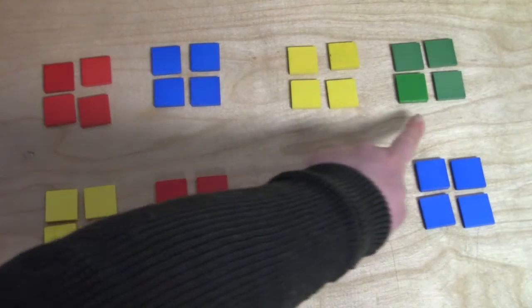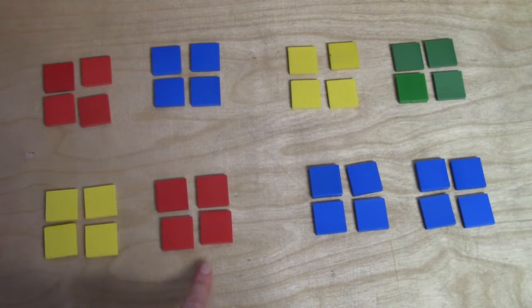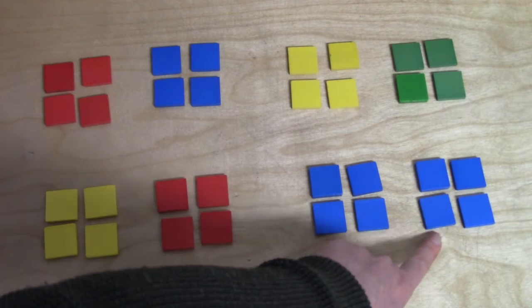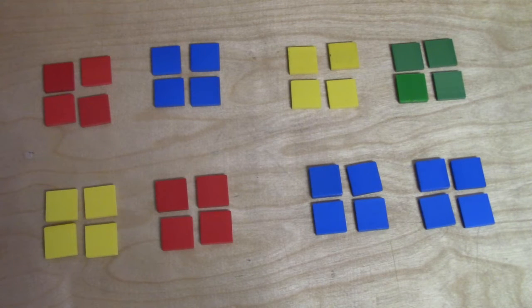Let's count these eight groups by four. Four, eight, twelve, sixteen, twenty, twenty-four, twenty-eight, thirty-two. Eight groups of four is thirty-two.